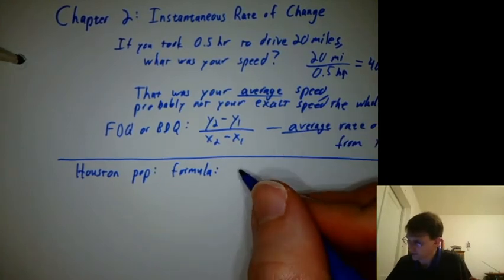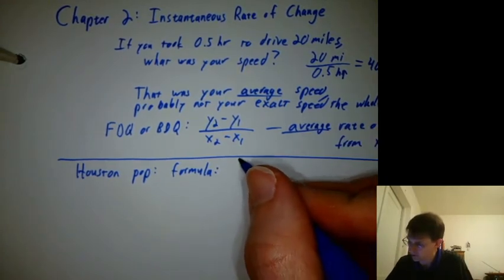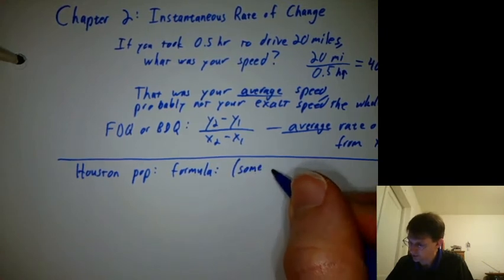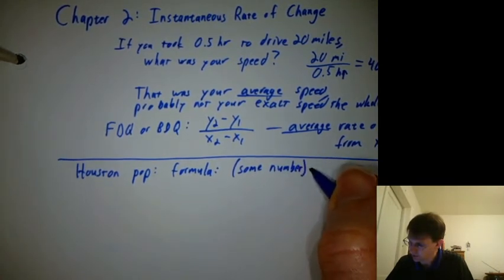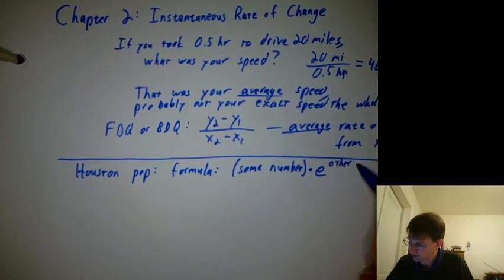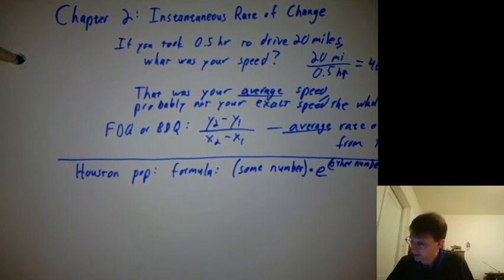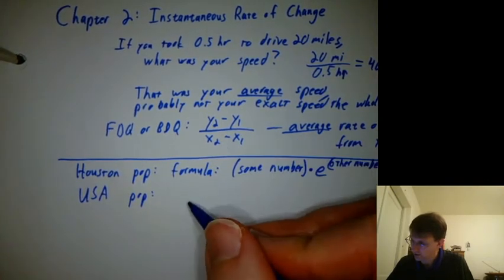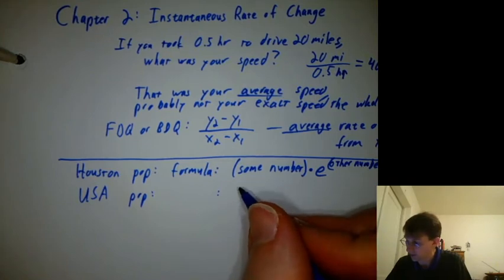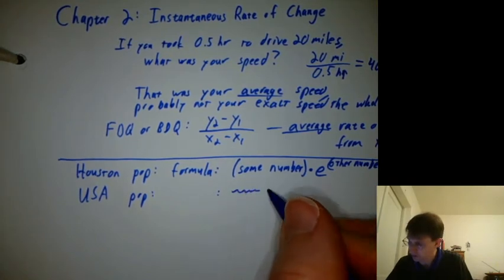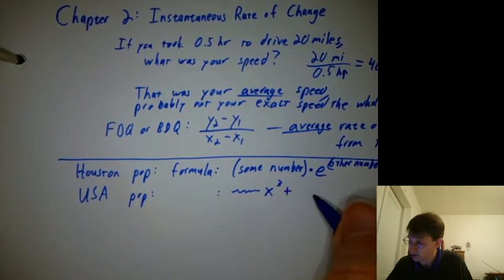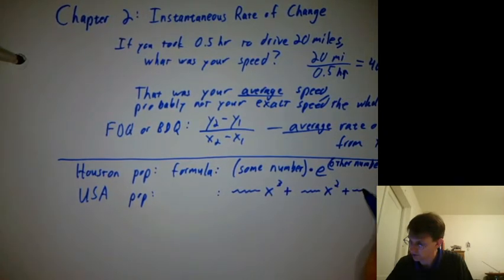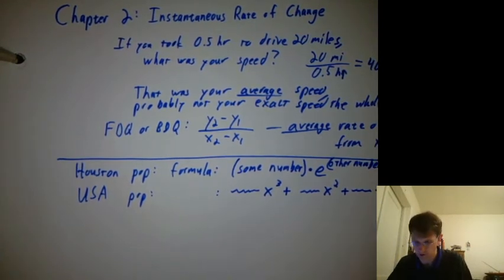Remember, we had fitted trend lines and we saw that an exponential was better than a polynomial for Houston — it was some number times e to the some other number times x or t. For the USA population, a polynomial was better than an exponential — some number times x cubed, plus some other number times x squared, plus some other number times x, plus some other number. Real world formulas often have lots of numbers with lots of decimals.